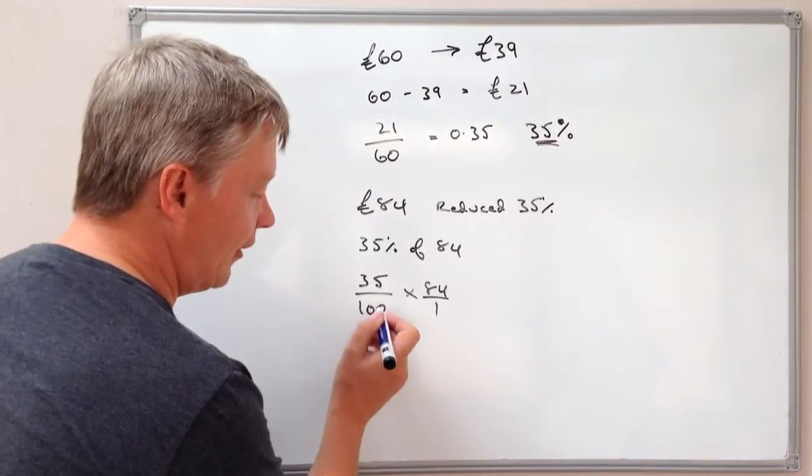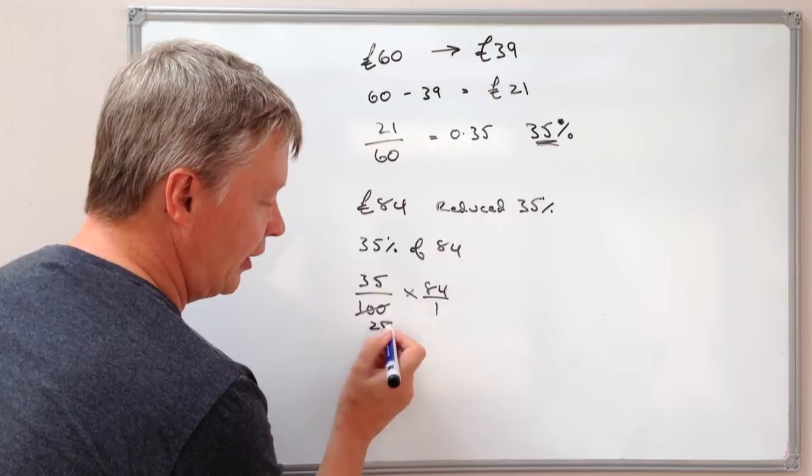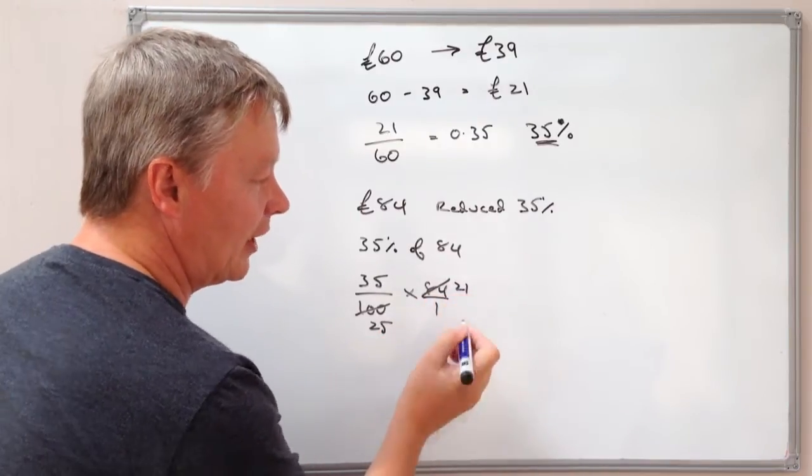And like in the previous videos, I'm just going to reduce these and make them a little bit easier to calculate. So if I divide that by 4 I get 25, divide that by 4 I get 21.